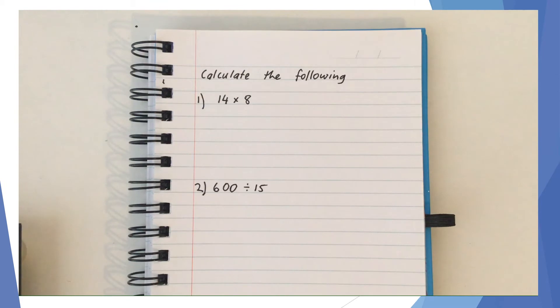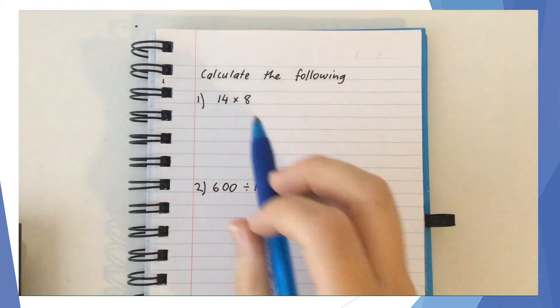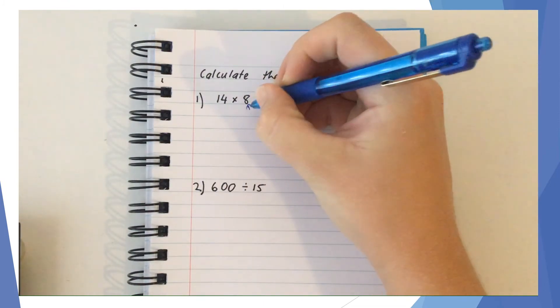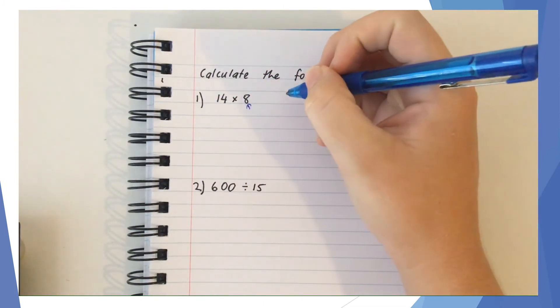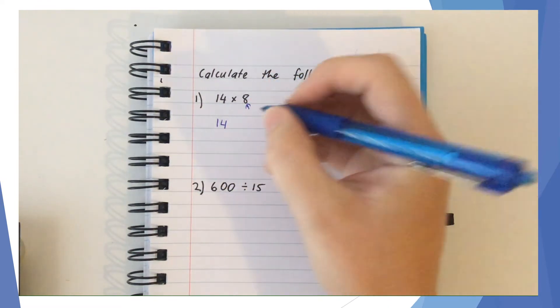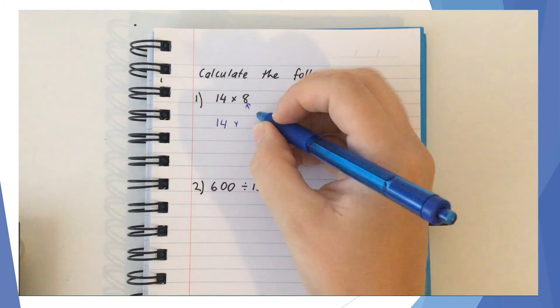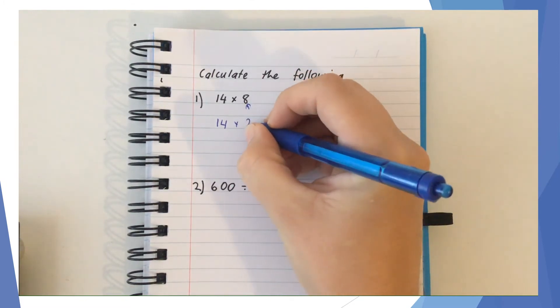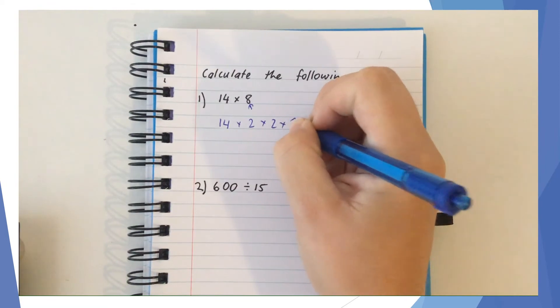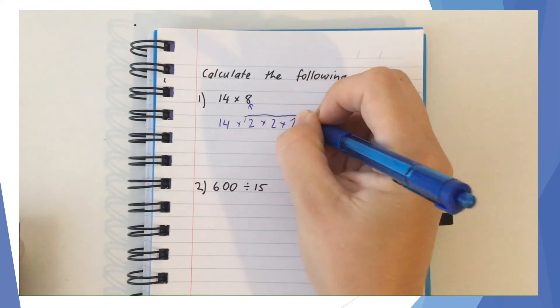Now we're going to look at some examples of working in stages. To calculate 14 times 8, when I look at 8 here, I'm going to double it, then double it, then double it. I leave the 14, and for the 8, it's the same as doing 2 times 2 times 2, which equals 8.